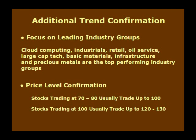Another trend confirmation indicator I like to use is price level. I've discovered that stocks that trade up to $70 or $80 usually will trade up to $100, and stocks trading at $100 usually will trade up to $120 to $130 or even higher. This is very simplistic — if a stock reaches $100 or above, it's an indication that the stock is producing good earnings and equity growth. Very few stocks ever reach this price level, so if they do, it's a good indication that it's a successful stock and will probably continue the price up move.